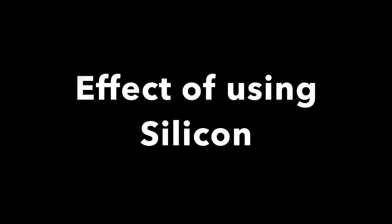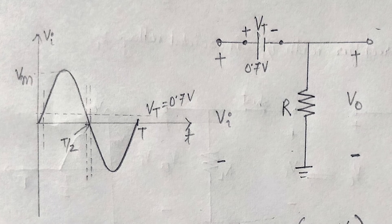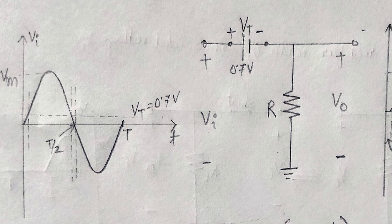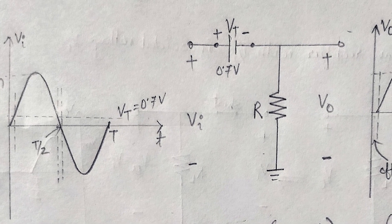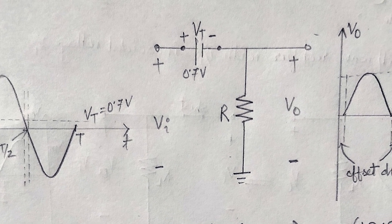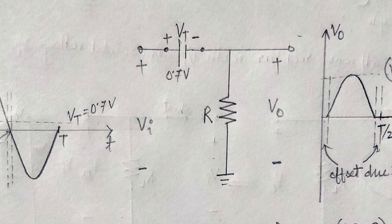Now, we will consider the effect of using silicon diode with threshold voltage Vt equal to 0.7 V. As shown in this figure, for the forward bias region, the applied signal must be at least 0.7 V before the diode turns on.